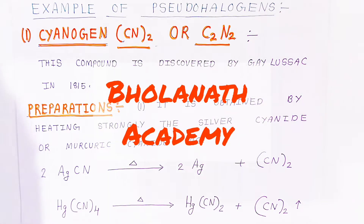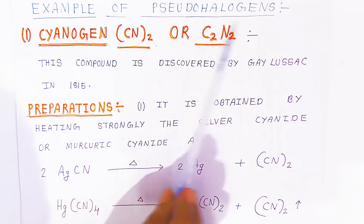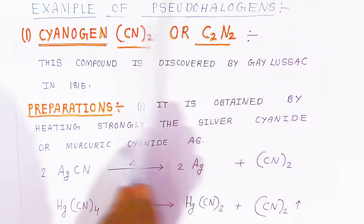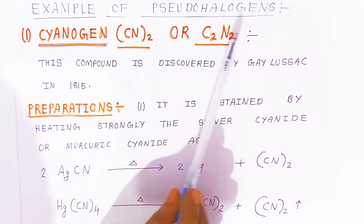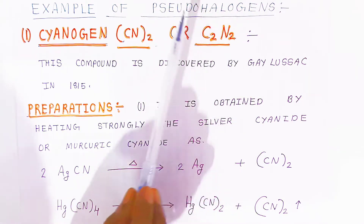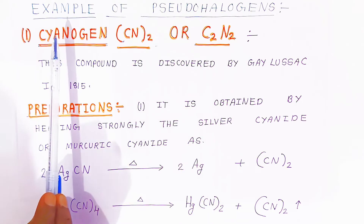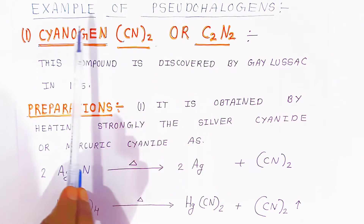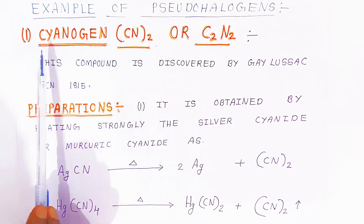Hello students, once again welcome to Bhulanatha Academy. In this video we are going to see the examples of pseudo halogens. In the last video we already saw what pseudo halogens are and their properties. Now in this video we are going to see the first example of a pseudo halogen, which is called cyanogen.